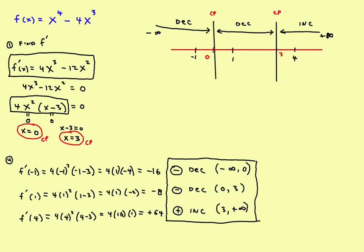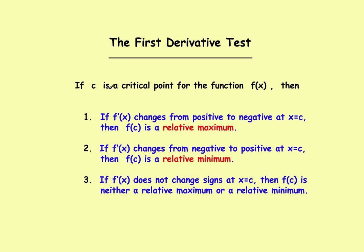Now let's take a quick look at the first derivative test. If c is a critical point: if the derivative changes from positive to negative — increasing to decreasing — you have a relative maximum. If it goes from decreasing to increasing, you have a relative minimum. And if the sign of the derivative does not change — going from increasing to increasing — then you have neither a relative minimum nor a relative maximum.